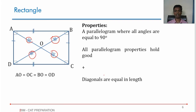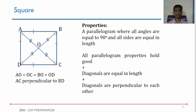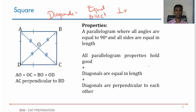In a parallelogram, diagonals bisect each other. In a rhombus, diagonals bisect each other and are perpendicular to each other. In a rectangle, diagonals bisect each other and are equal in length. So in a square — a parallelogram where all four sides are equal and all four angles are 90° — it is both a rhombus and a rectangle. The diagonals are equal in length, bisect each other, and are perpendicular to each other. So AO equals OC equals BO equals OD, and AC is perpendicular to BD.